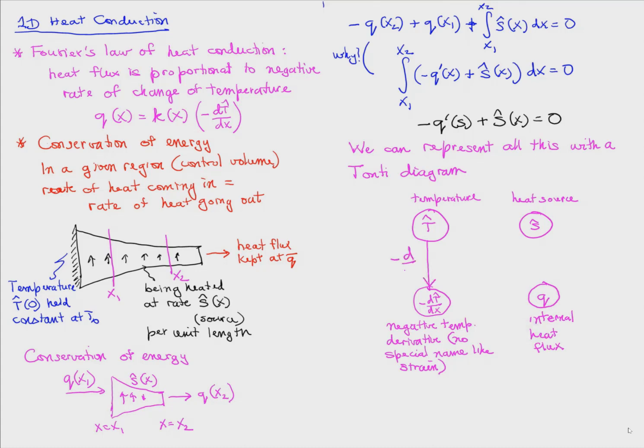The heat flux takes the role of internal axial force. So we have -d/dx, thermal conductivity, d/dx, and the boundary conditions. We see how the Tonti diagram for 1D heat conduction resembles the Tonti diagram for the axially loaded bar.